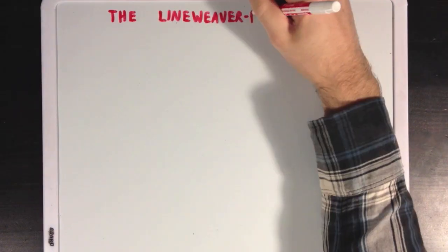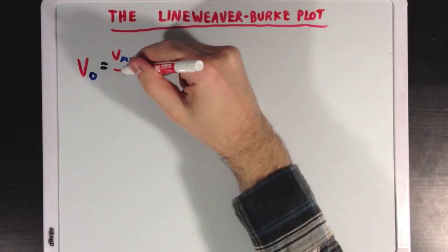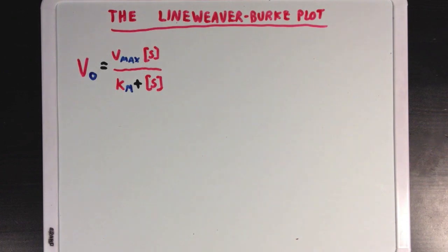So, the first thing that I'm going to talk about is something called a Lineweaver-Burk plot, and how it allows us to look at the Michaelis-Menten equation in a different way. So, what I'm going to do is take the Michaelis-Menten equation, but then take the inverse of both sides of the equation, so 1 over everything.